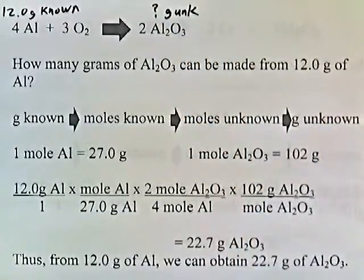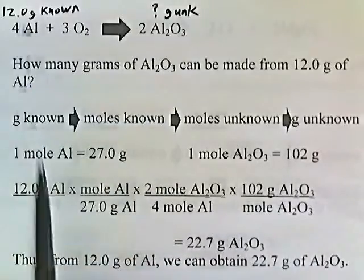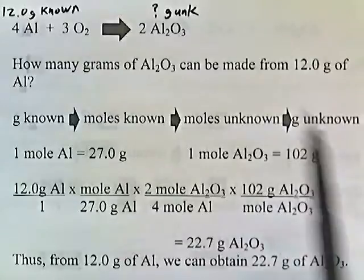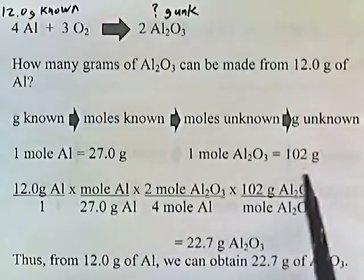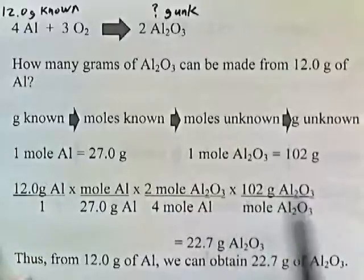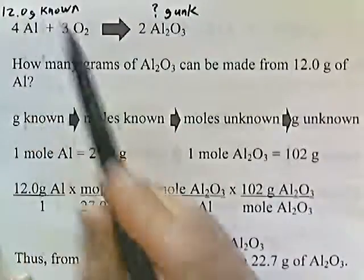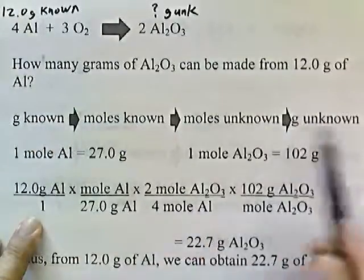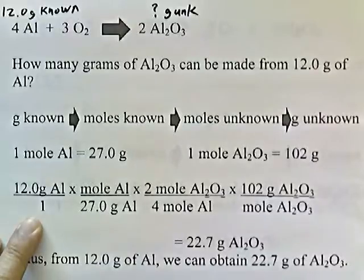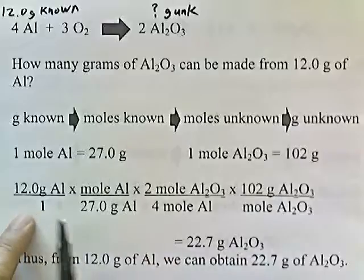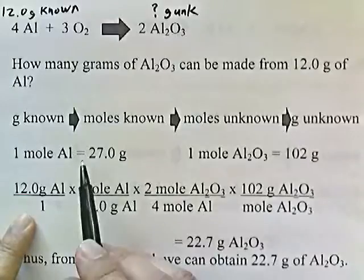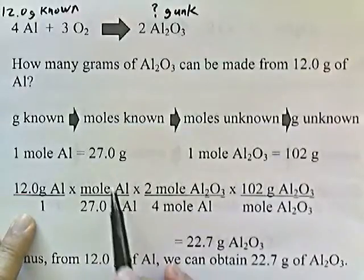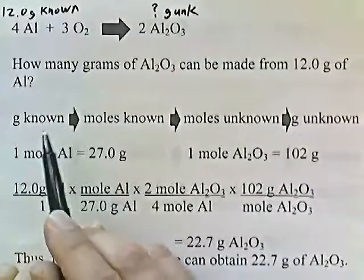Now that we know the known and the unknown, we have to figure out how much one mole of each weighs. On the periodic chart, aluminum is 27 grams per mole, and one mole of aluminum oxide comes to 102 grams per mole. We start with what they give us: 12 grams of aluminum over one. To convert from grams to moles, I put 27 grams of aluminum on the bottom and one mole of aluminum on top, because one mole is 27 grams. We've gone from grams of known to moles of known.